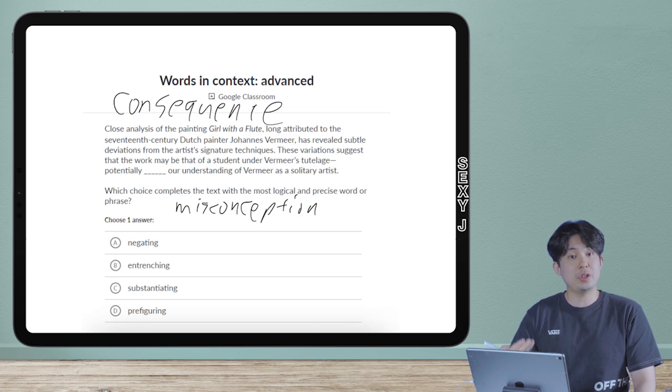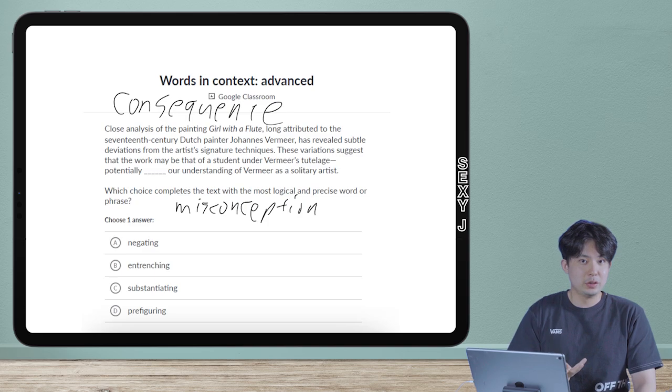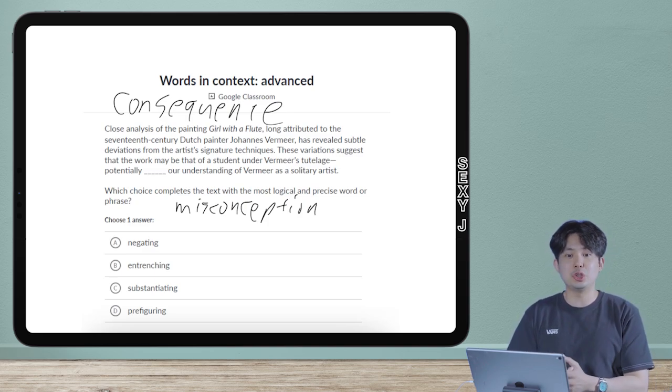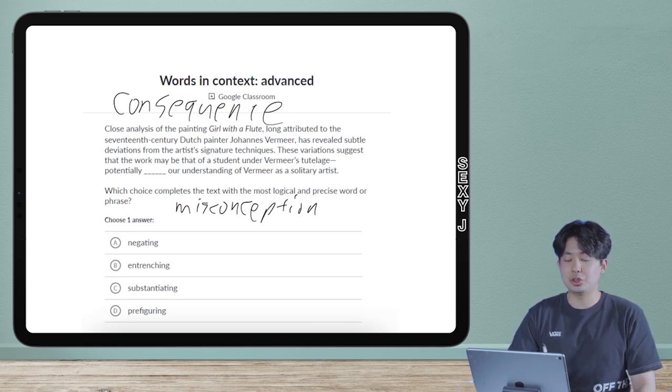For example, you could say: because of my hard work studying, my grades went up. Your grades going up is a consequence of your studying. Of course it could go in the negative direction as well. Because we didn't study at all, our grades dropped - that's another consequence.